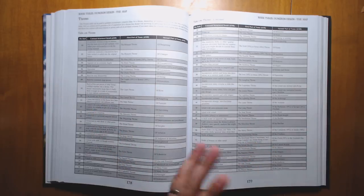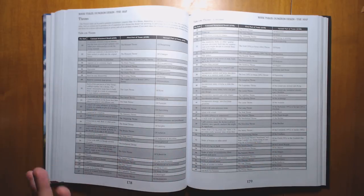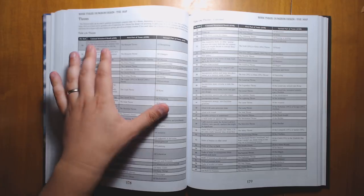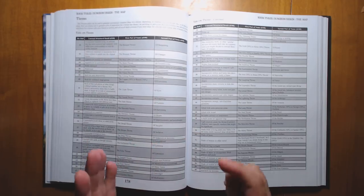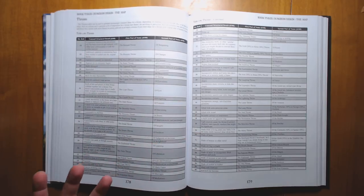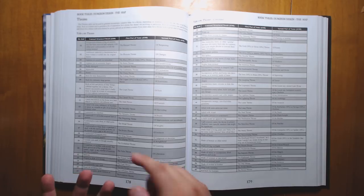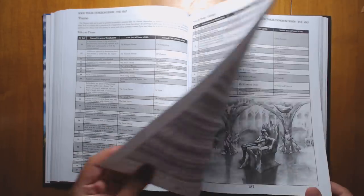This is one of my favorite ones. Thrones. He has a D100 table of types of thrones along with different types of names that you can combine. For a total of about a million thrones. Because it would be 100 times 100 times 100. Let's roll up a throne here.